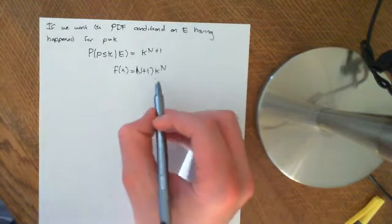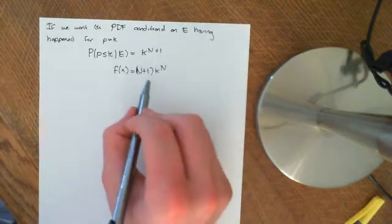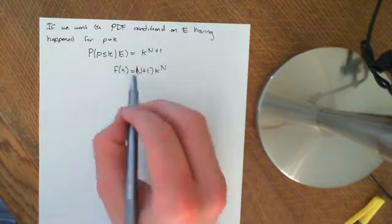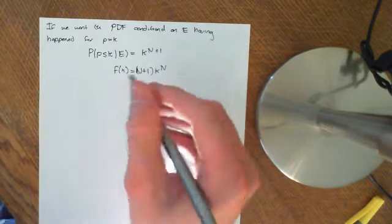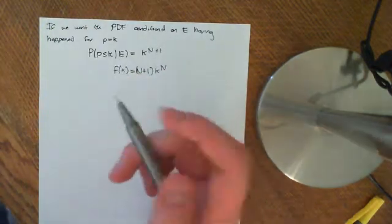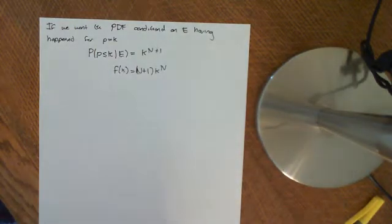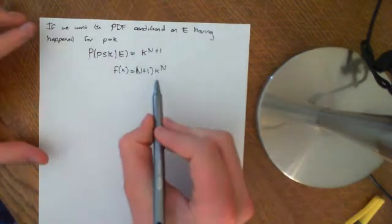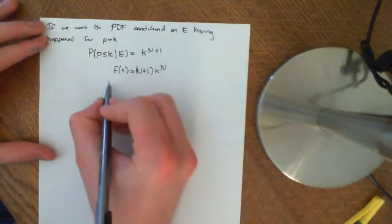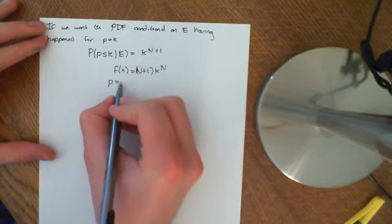So that tells us what the probability that the probability is equal to K is. This is the probability density function, the conditional PDF. It's saying E has occurred. What's the probability density function that P is equal to K?